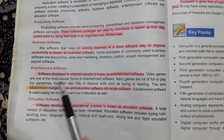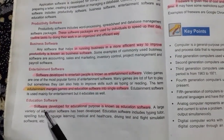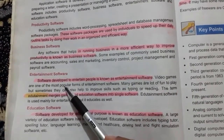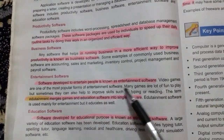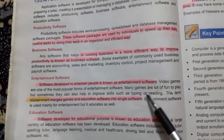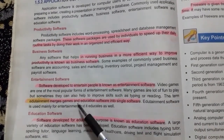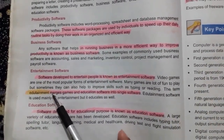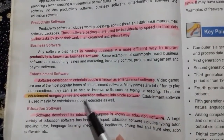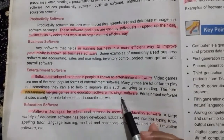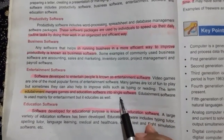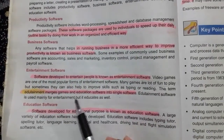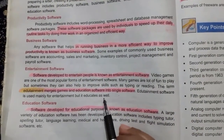Application software categories from the book include productivity software, business software, and entertainment software. Entertainment software is developed to entertain people, mostly games and fun activities. Edutainment software means games combined with education — it is primarily for entertainment but educates as well.